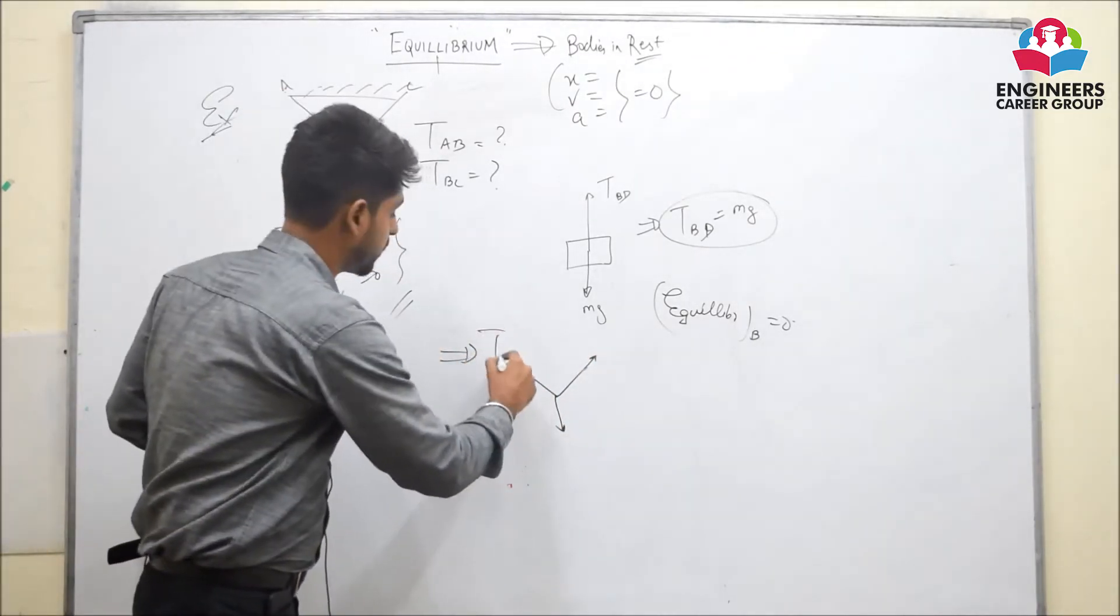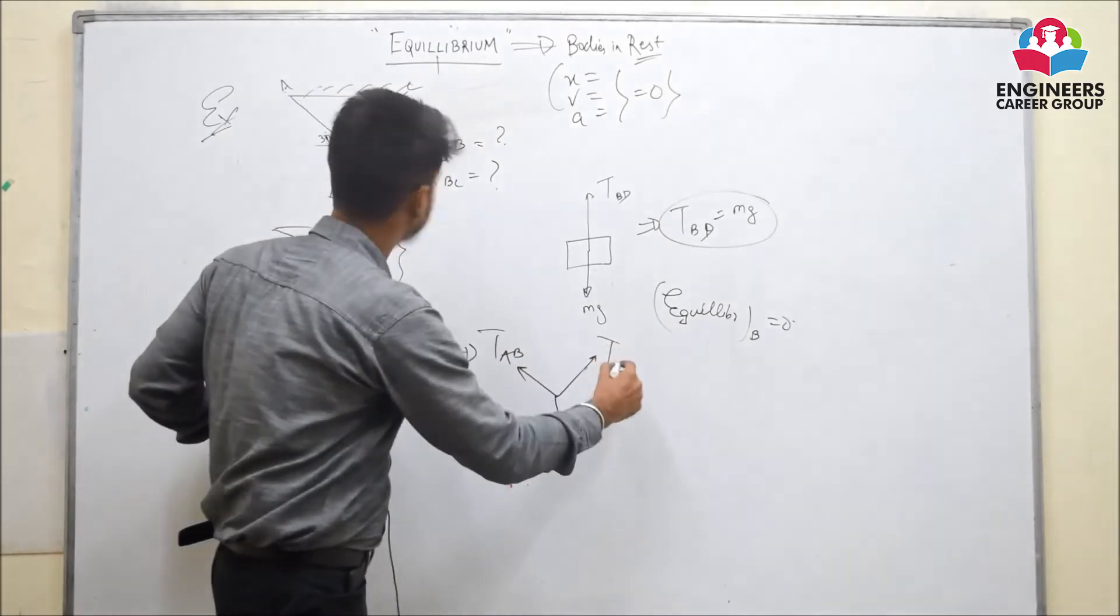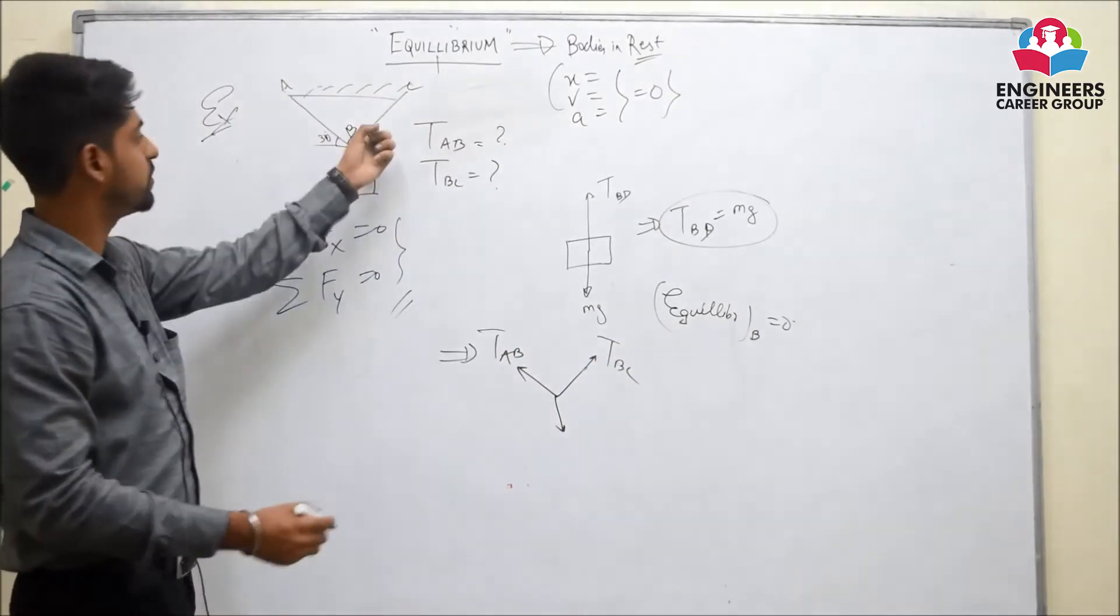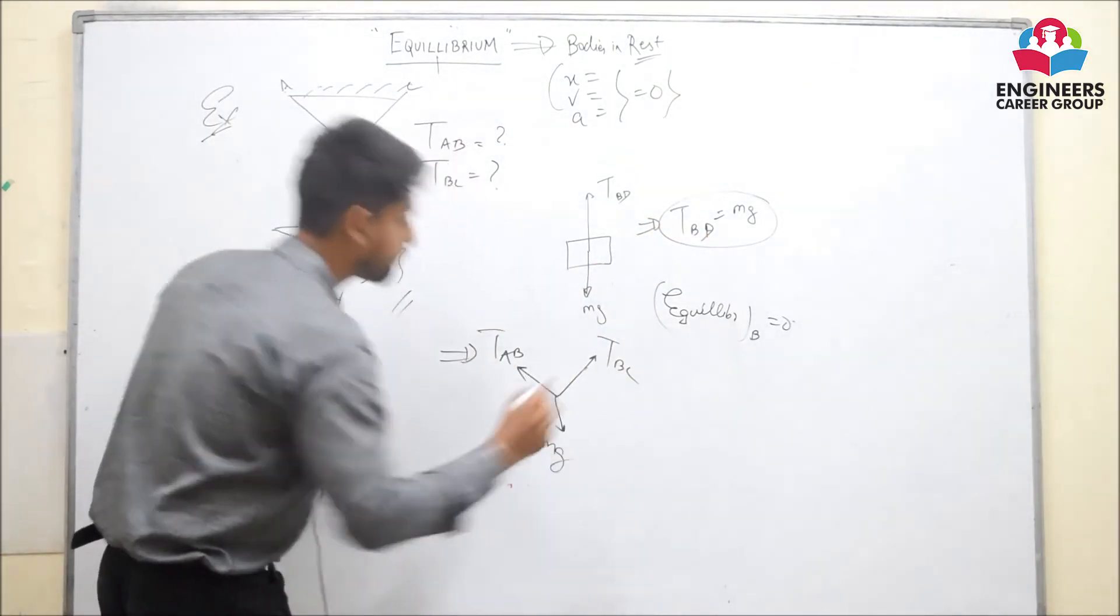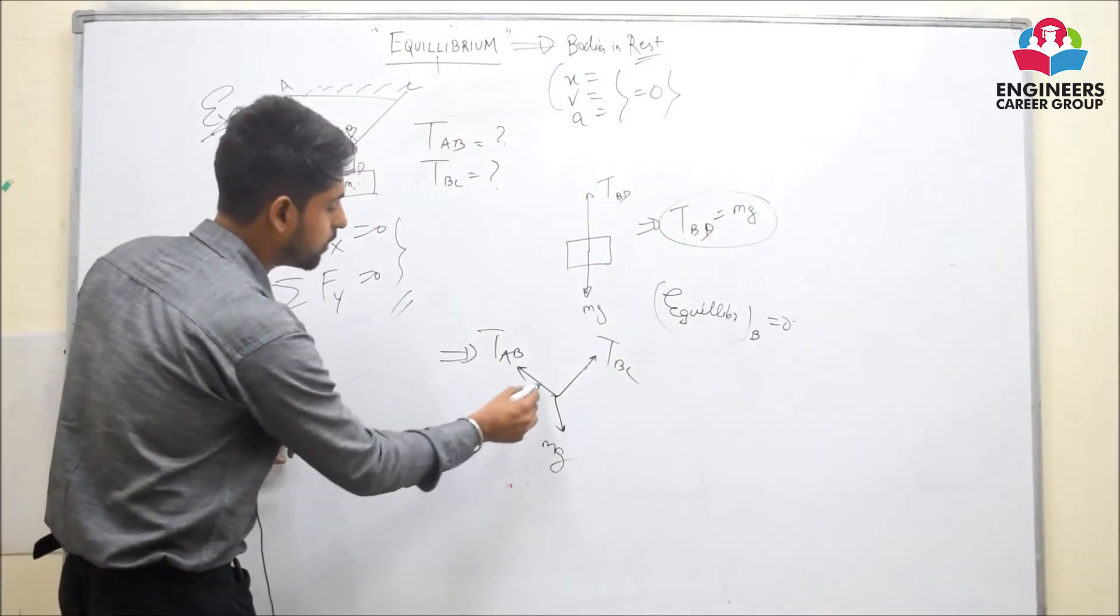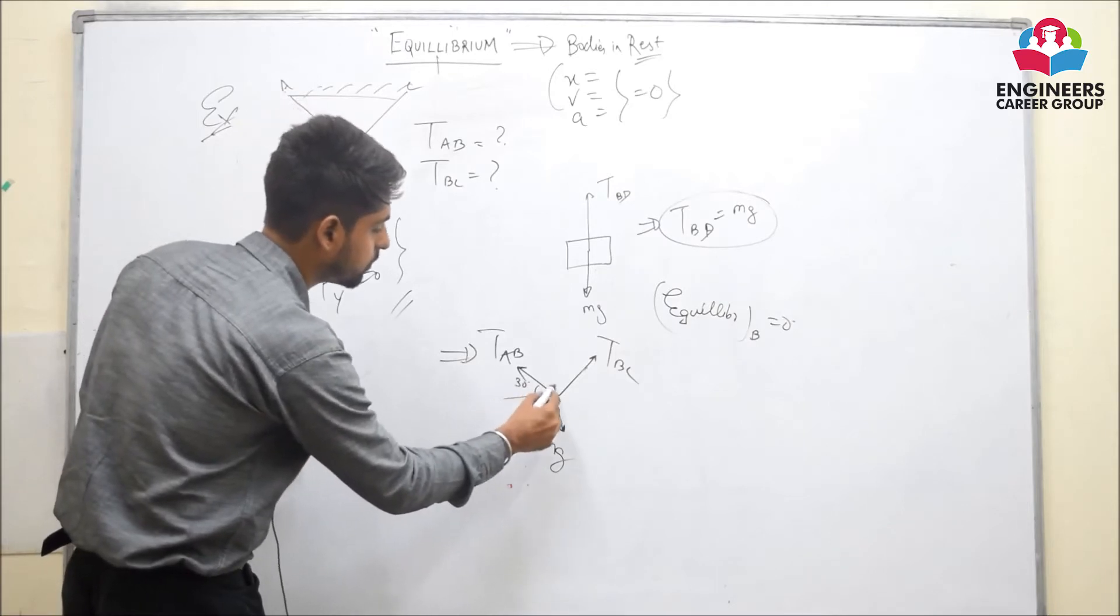First force is tension in string AB, second is tension in string BC and the third one is tension in string BD which is equal to mass Mg. Angles given clearly are this is 30 degrees and this is 90 degrees.